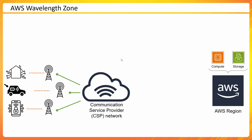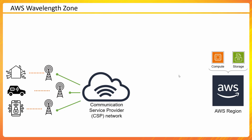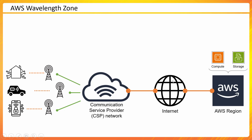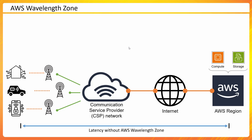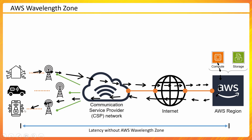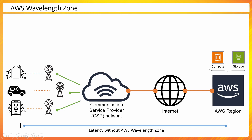The AWS region is where compute or storage services are hosted and where data has to be processed. The communication service provider receives the data and it must be transferred to the region, typically over the common internet or a different type of network, before it reaches the region. This means latency is the sum of that full path — the request travels from the mobile service provider to the AWS region, gets processed, and is then delivered back. There is significant latency involved in that.